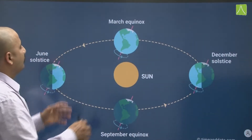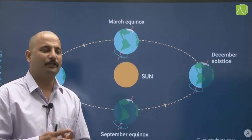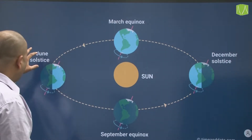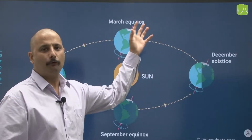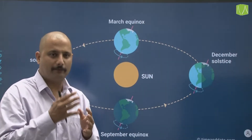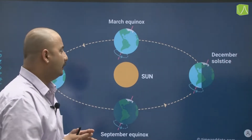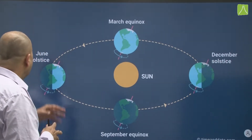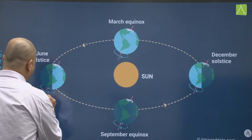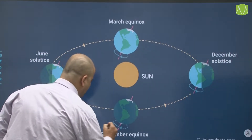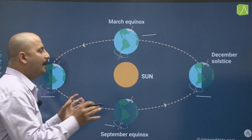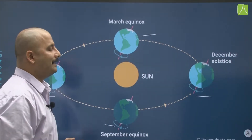Now here we have a visual representation where the sun is in the center and the earth rotates around it. We have two things: earth rotation as well as earth revolution. Earth revolves in four positions. This is our equinox and solstice.